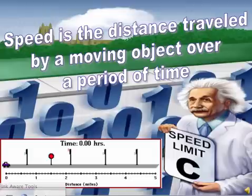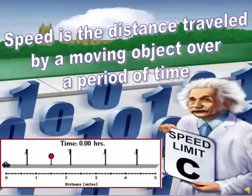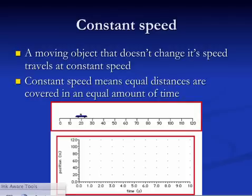Now, copy this definition down. Speed is the distance traveled by a moving object over a period of time. That right there gives you the equation for speed. Speed is the distance over time. Now, here in this little picture, we have Einstein holding up a sign saying the speed limit is c, c being of course the speed of light, which is 3 times 10 to the 8 meters per second.